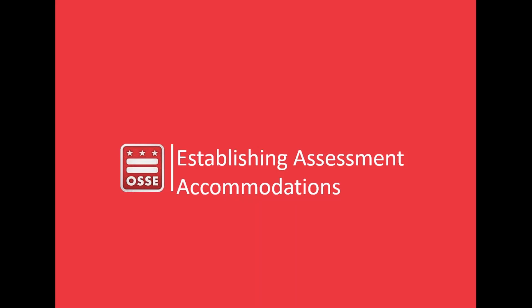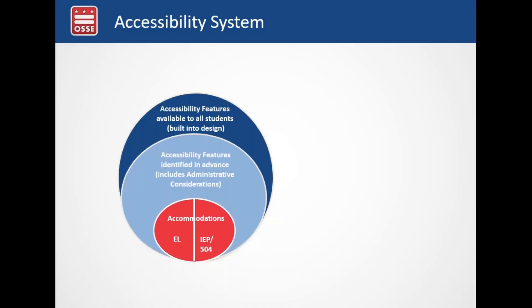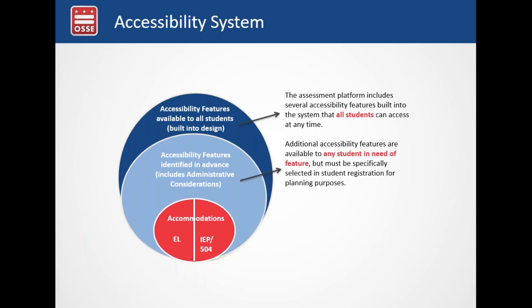Hi, I'm Jennifer Carpenter and I'll be speaking with you today about establishing assessment accommodations. This may be a review for many of you, but we're going to send in the follow-up email some guidance documents to help. There are three levels of features for accessibility included when students take high-stakes assessments. The assessment platform includes features built in for all students, accessibility features identified in advance in the student's personal needs profile, and accommodations available only to students with disabilities or English learners.